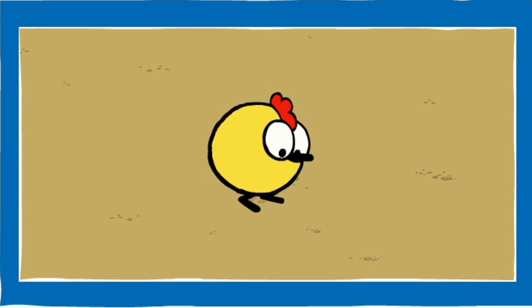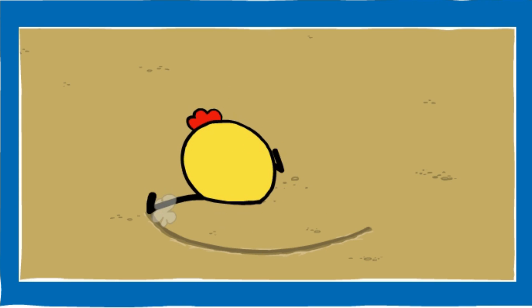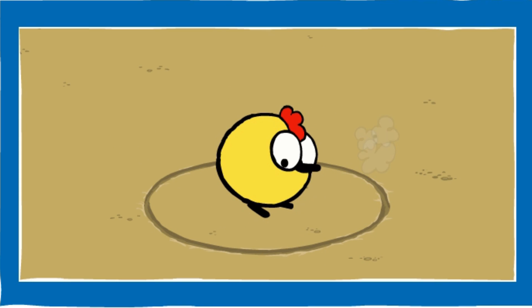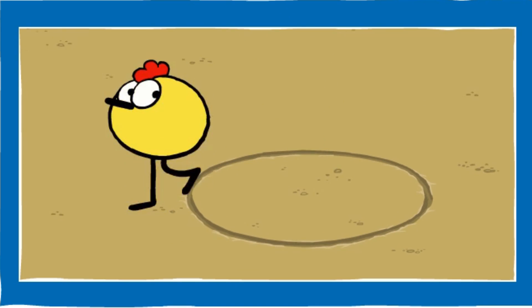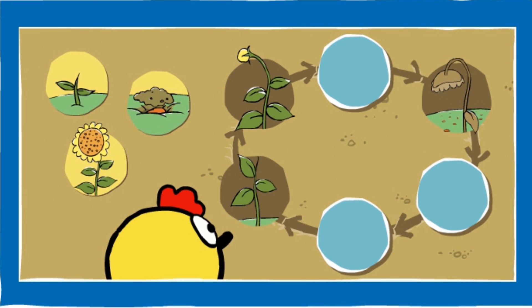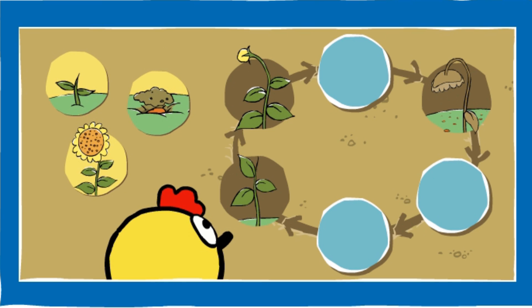Let's check out the sunflowers. How did they change as they grow from seeds? Help Peep put things in the right order. Drag the pictures onto the spots in the circle where you think they go. Think about what happens first and what happens next.